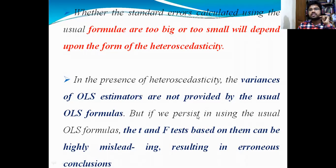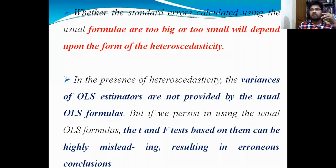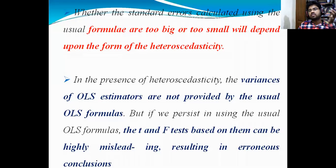But if we persist in using the usual OLS formulas, the T and F tests based on them can be highly misleading. As I told you, F and T tests — when you get wrong results, wrong estimation, definitely on the basis of T values we are going to conclude. Whatever you are going to conclude can be misleading and can result in erroneous conclusions — nothing but spurious results, wrong results. Have you understood about the consequences of heteroscedasticity, dear students?